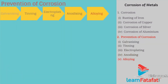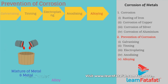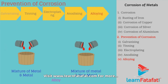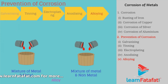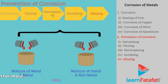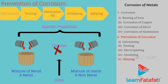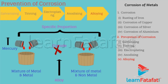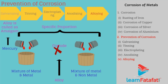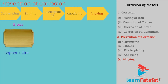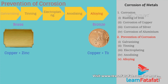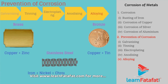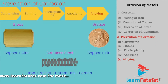Alloying. An alloy is a homogeneous mixture of two or more metals, or a metal and non-metal, in a specific proportion. Alloys do not corrode easily. During formation of an alloy, if one metal is mercury, the alloy is called an amalgam. For example, brass is made of copper and zinc; bronze is made of copper and tin; stainless steel is made of iron, nickel, chromium and carbon.